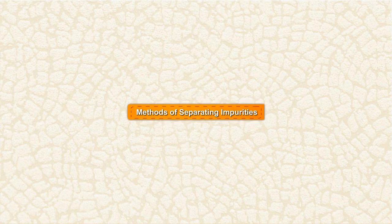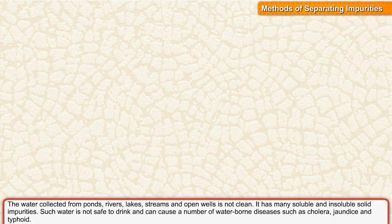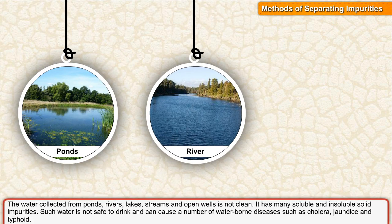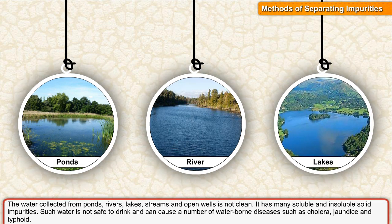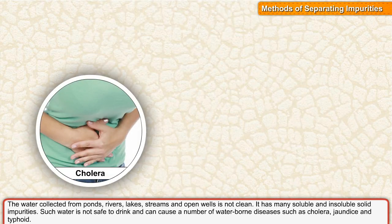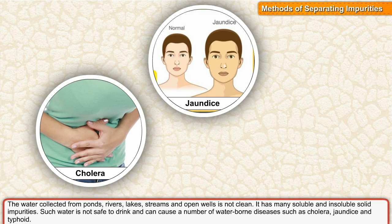Methods of Separating Impurities. The water collected from ponds, rivers, lakes, streams and open wells is not clean. It has many soluble and insoluble solid impurities. Such water is not safe to drink and can cause a number of waterborne diseases such as cholera, jaundice and typhoid.